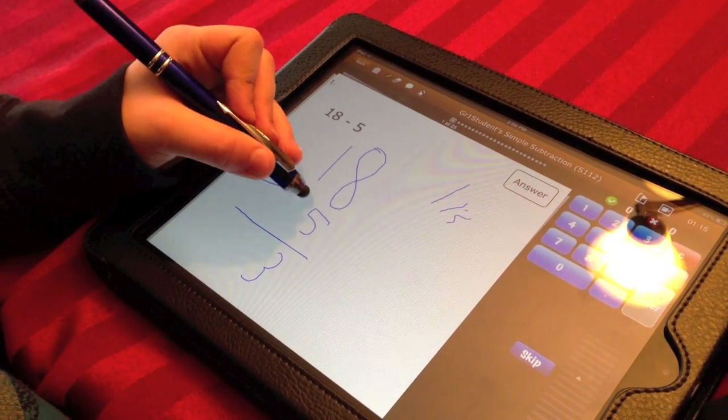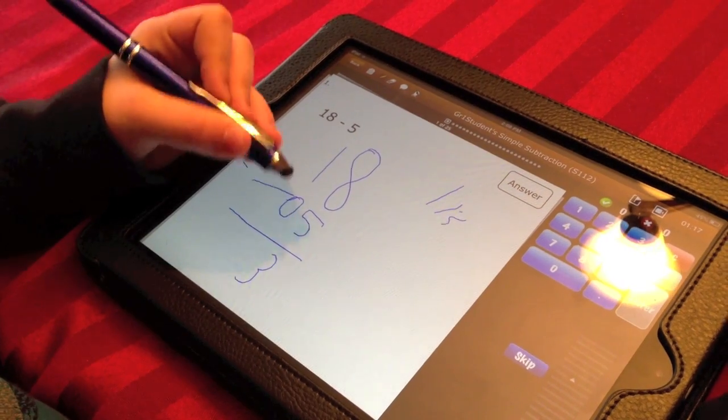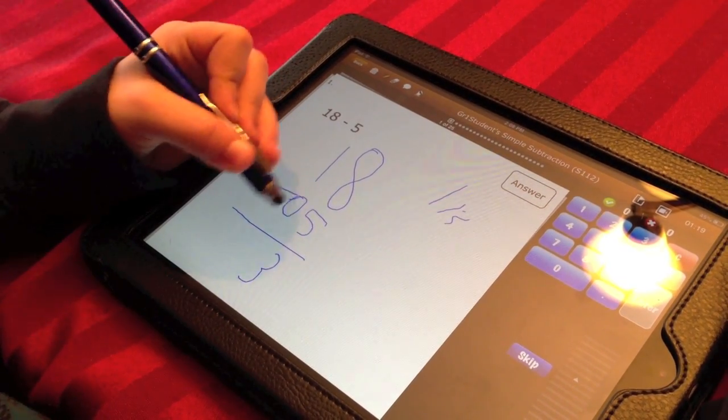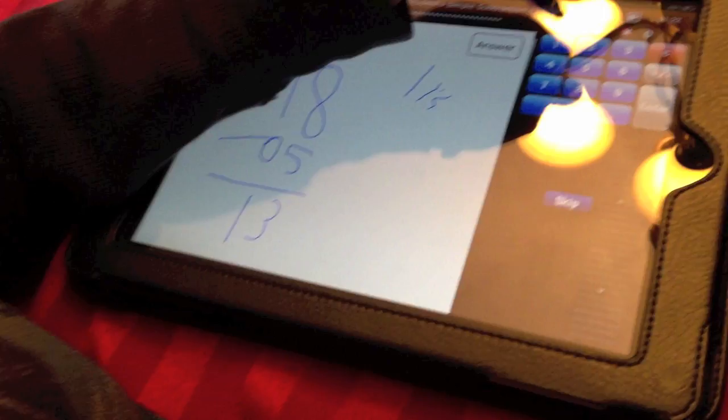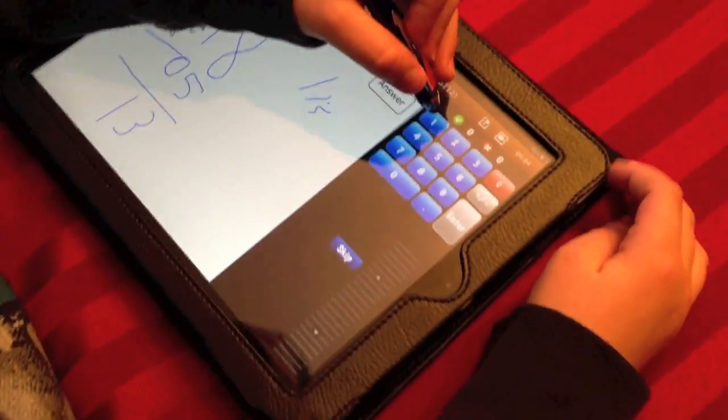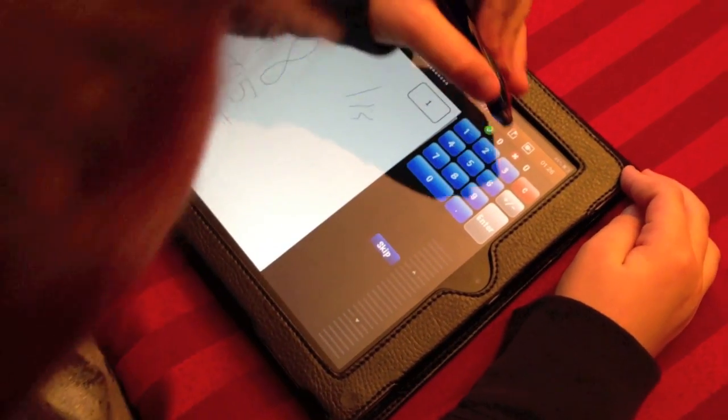And 1 minus 0, of course. If you don't see a number, you could just put a 0 there. So 1 minus 0 equals 1. And then you just touch the keypad over here and put 1, 3.